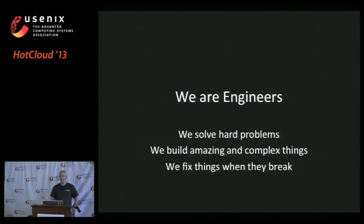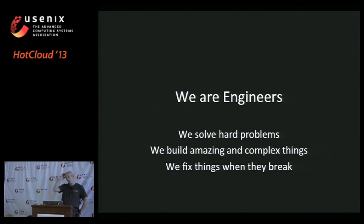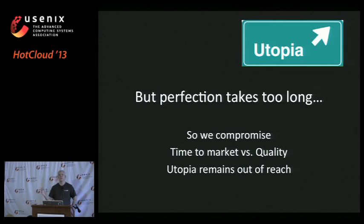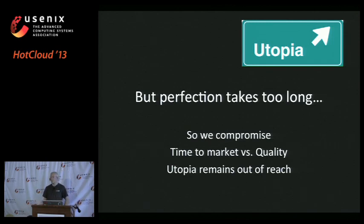What do I mean by cloud native? For this audience — generally engineers, maybe researchers — we're trying to solve hard problems. We build amazing complicated things and fix them when they break. We're always trying to build things perfectly: perfect code, perfect hardware, perfectly operated. That's the utopia, the goal we're trying to get to. But this perfection takes too long, so we end up compromising. There's always this time-to-market versus quality tradeoff. This utopia is always slightly out of reach — you never ship a perfect product, it just takes too long.